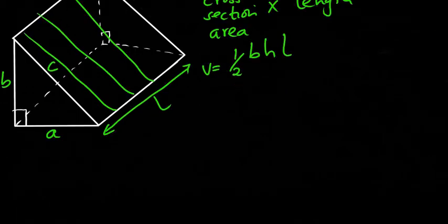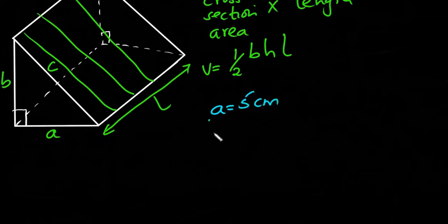Okay. So if we have A as 5 cm and B as 12 cm, and then the length is 20 cm, we can try to work out the volume of that prism given those measurements.